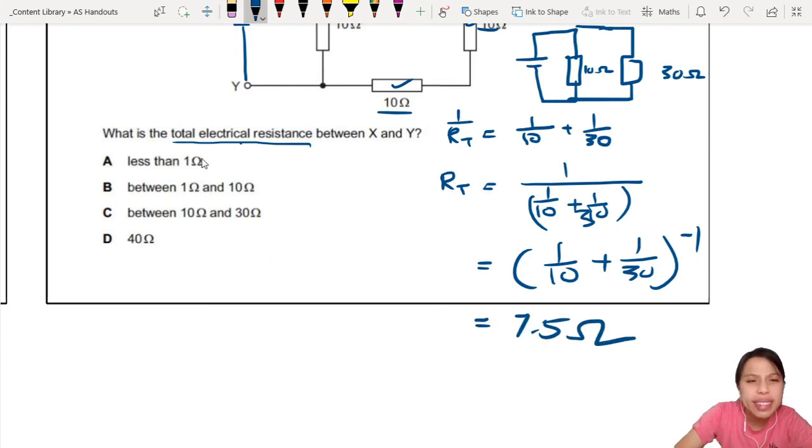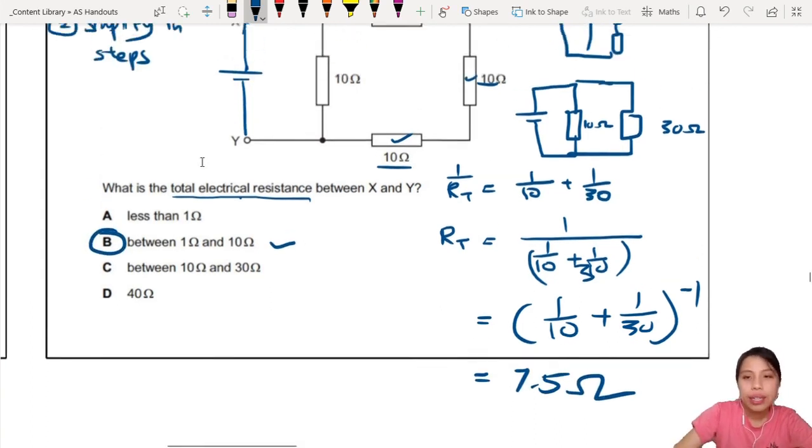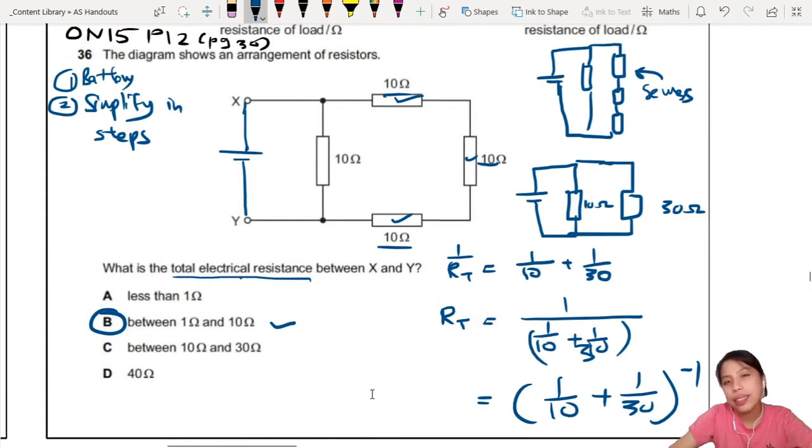Which is this answer, so B. Now there are ways where you can guesstimate this. Less than 1 ohm? No, cannot be. 40 ohms? This one definitely out, confirm out, because 40 ohms means you add them all together. So cannot be this, cannot be this. So you can guesstimate.